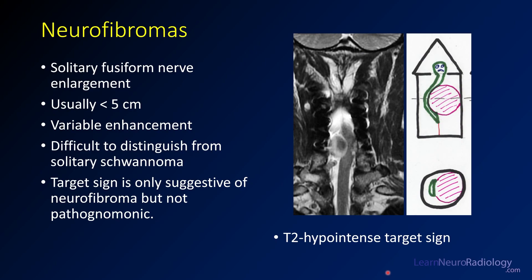Neurofibromas can be similar. Their enhancement will be variable, and it can be difficult to differentiate, particularly if solitary. These are usually less than five centimeters. Those associated with neurofibromatosis can be more plexiform. There's something called the T2 target sign — when the central portion of the neurofibroma has a T2 hypointense appearance. This suggests you might be looking at a neurofibroma, but it doesn't necessarily define what you're seeing.